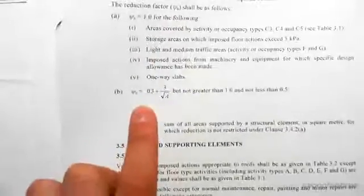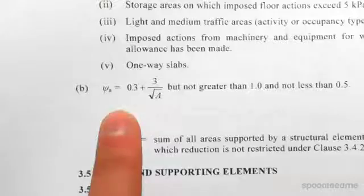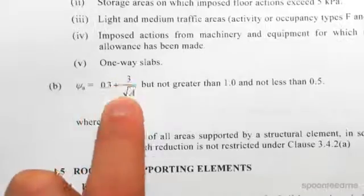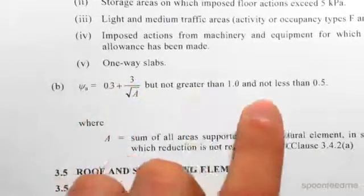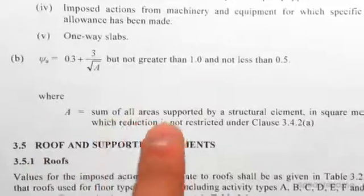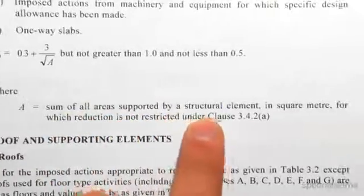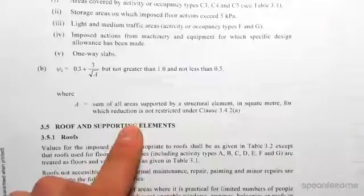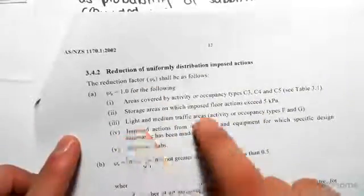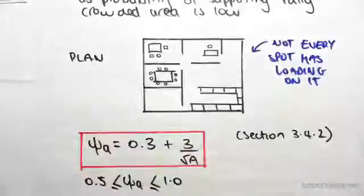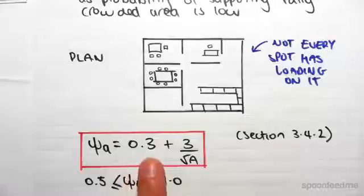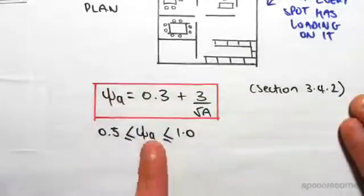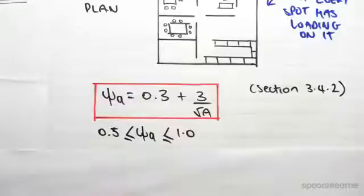We have a formula down here: 0.3 plus 3 on root a, not greater than 1 and not less than 0.5, where a is the sum of all the areas supported by a structural element in square meters. You can read through here some of the exceptions to this rule, but just generally speaking, psi a is 0.3 plus 3 on root a, where psi a cannot be greater than 1 and not less than 0.5. So let's just